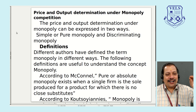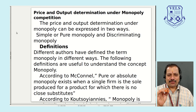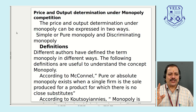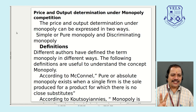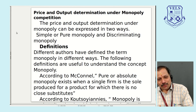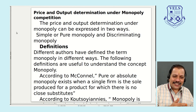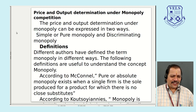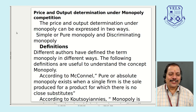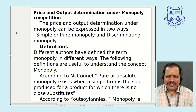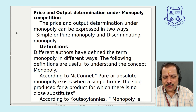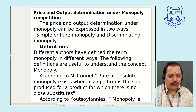Let us start with the definition. The price and output determination of monopoly can be expressed in two ways: one is pure monopoly and discriminating monopoly. So we have to define both simple monopoly as well as the discriminating monopoly. Different authors have defined the term monopoly in different ways.